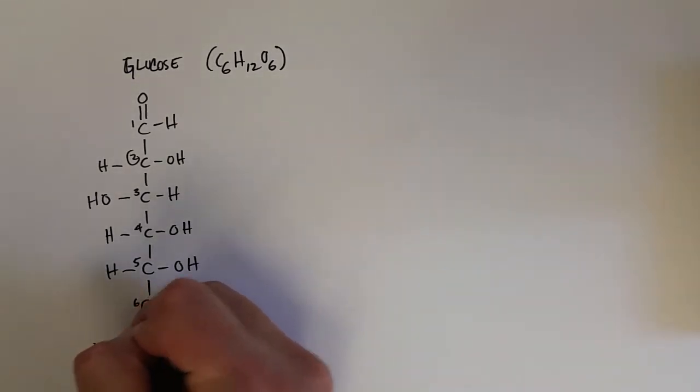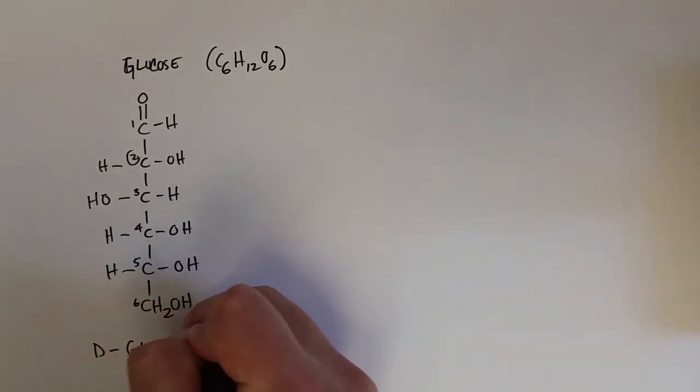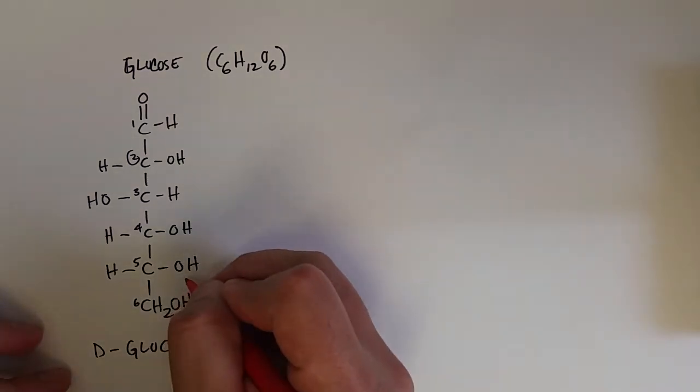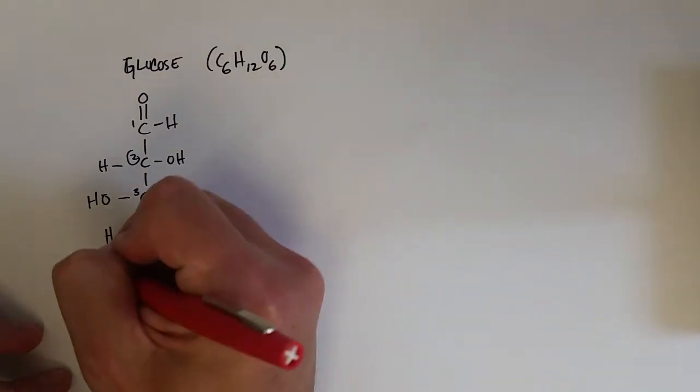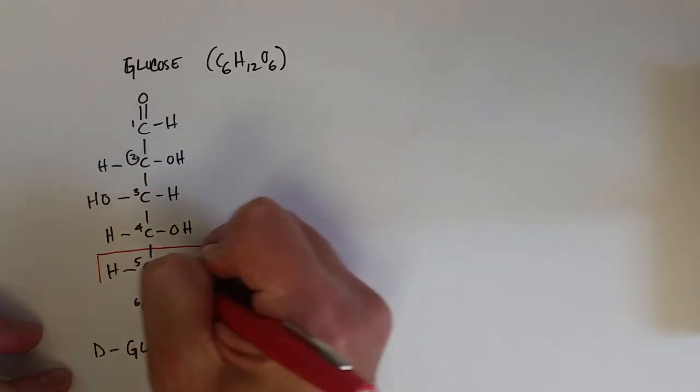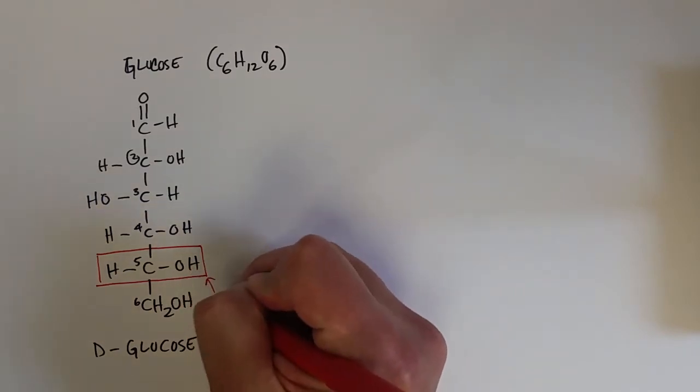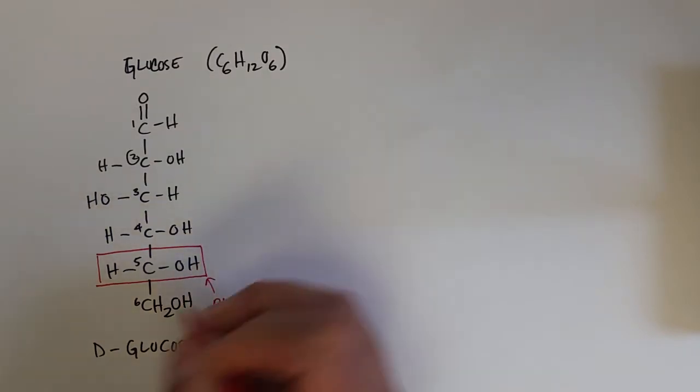...we're going to refer to as D-glucose. We're calling it D-glucose because of the position of the hydroxyl group on the fifth carbon when we draw it in what we're going to call the Fisher projection formula. If the hydroxyl group is on the right, it is the D isomer of the monosaccharide, in this case glucose.